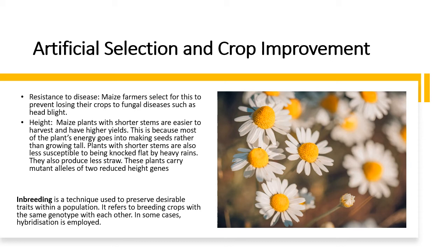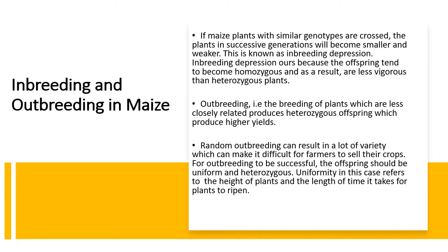Some royal families had the gene for hemophilia, and because cousins married each other, they started to pass it on within themselves, resulting in an increased chance of offspring expressing hemophilia. So inbreeding can lead to what we call inbreeding depression. If you cross maize plants with similar genotypes, the plants in successive generations start to become smaller and weaker. That is because there is no variety of genes — the allele frequency is not expanding — and you are less likely to make heterozygous plants, so they would be less vigorous.